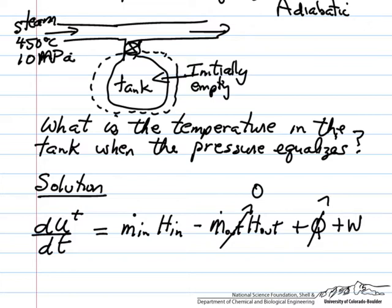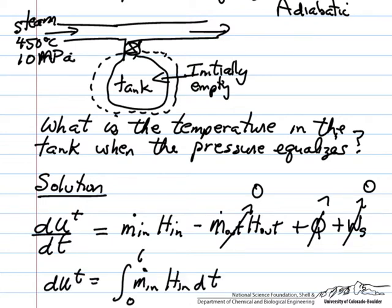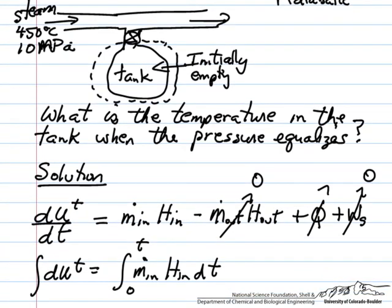And then there is shaft work, and there is no shaft work, so that's 0. So we have a simplified equation that we can integrate because what we're interested in is the initial and final conditions. So 0 to whatever the time is, and that means we integrate this.